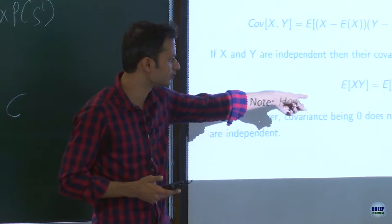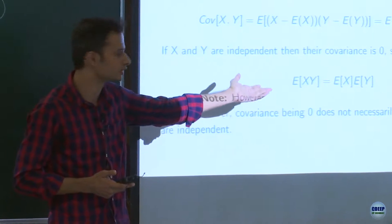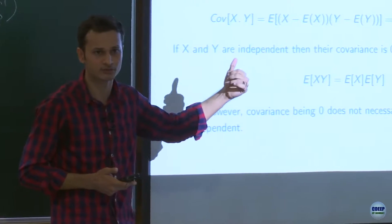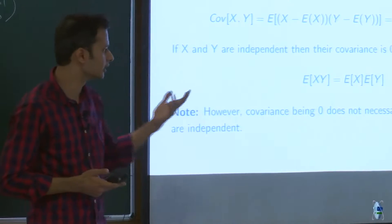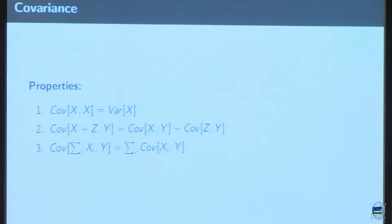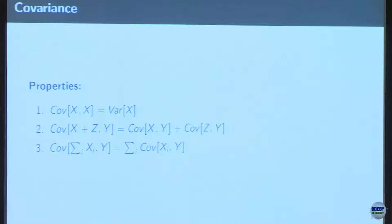E[XY] = E[X] · E[Y] is the same as in the independent probability case. Covariance of X with itself equals variance of X, and covariance of (X + Z, Y) equals covariance of (X, Y) plus covariance of (Z, Y). These are the properties — you can try them.